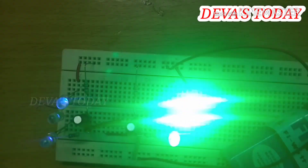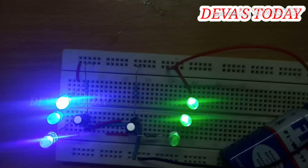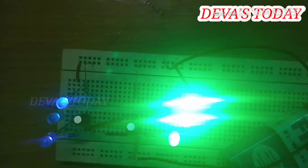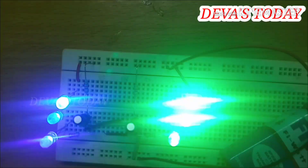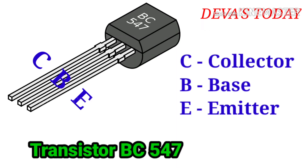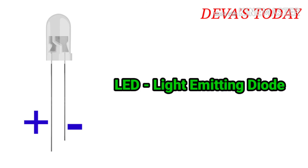Here we have a circuit. The circuit has been set up and we will start to add to the circuit. If you want to add a comment box, you can add a comment box. If you want to add two transistors, we are using the BC547.